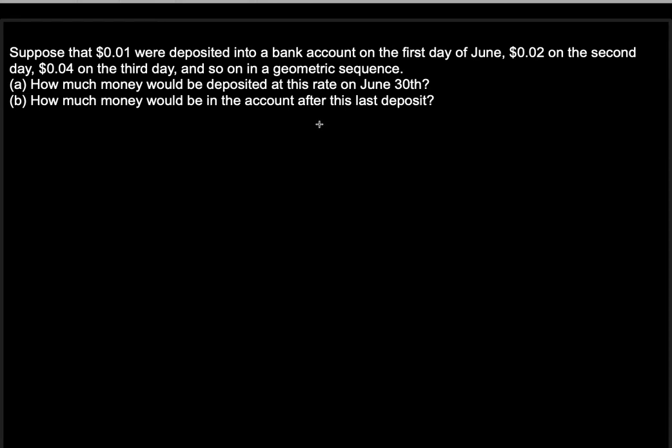First we're asked to find how much money would be deposited at this rate on June 30th. Speaking of geometric sequence, we know that we're being asked to find the 30th term, because every deposit is a term on its own. The first deposit is the first term of the sequence, the second deposit is second term, the third deposit is the third term, etc.